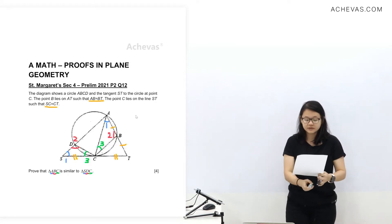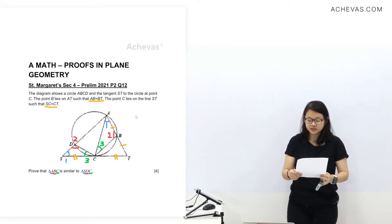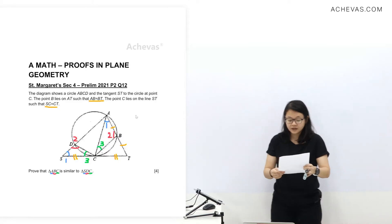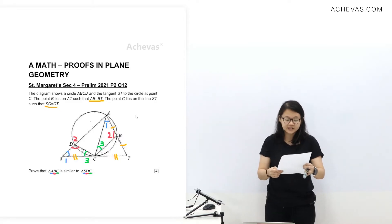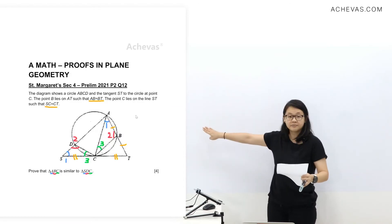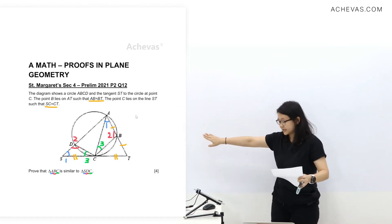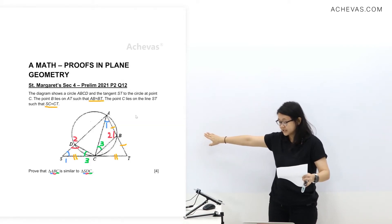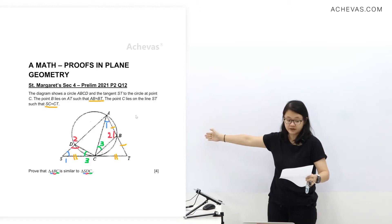The diagram shows the circle ABCD and the tangent ST to the circle at point C. The point B lies on AT such that AB equals BT. The point C lies on the line SD such that SC equals CT. I have filled in this information in the diagram, whereby AB equals BT and SC equals CT are both drawn.